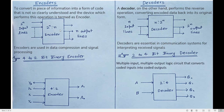The basic functionality of an encoder is to convert the two to the power of n input information, or any piece of information, into a code — converting 2^n information to an n-bit code.